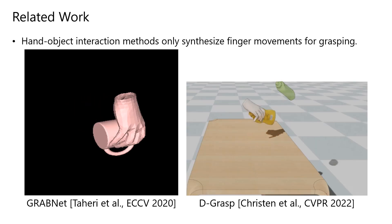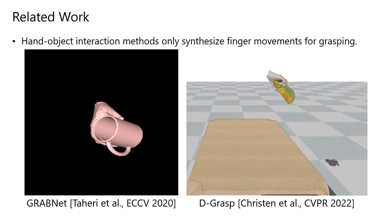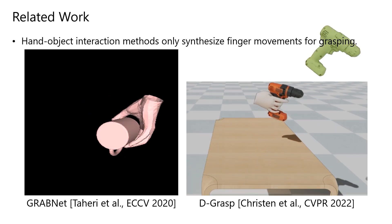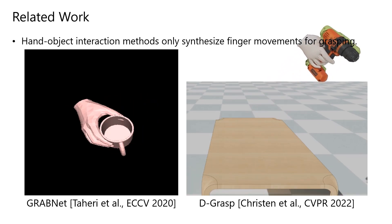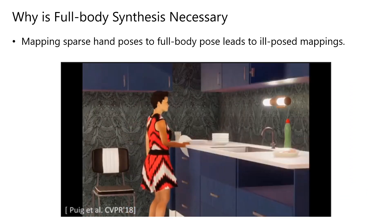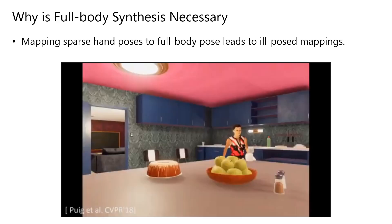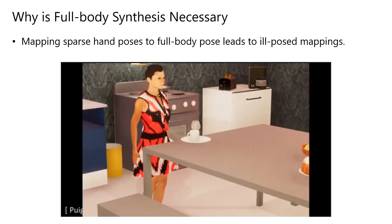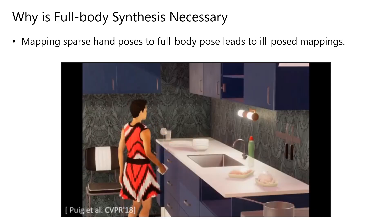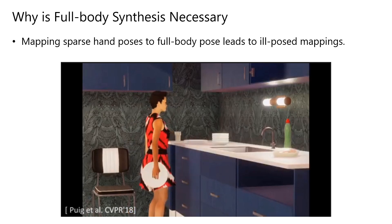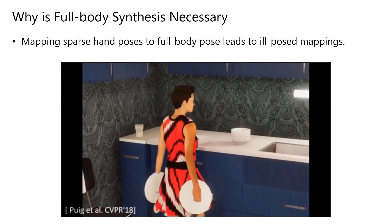Whereas existing works on hand-object interaction focus only on synthesizing finger movements for grasping various objects. However, to create a plausible motion sequence for a visual character to interact with an object realistically, modeling hand-motion interactions alone is not sufficient. Rather, we believe it's crucial to operate in the space of full-body motion synthesis.